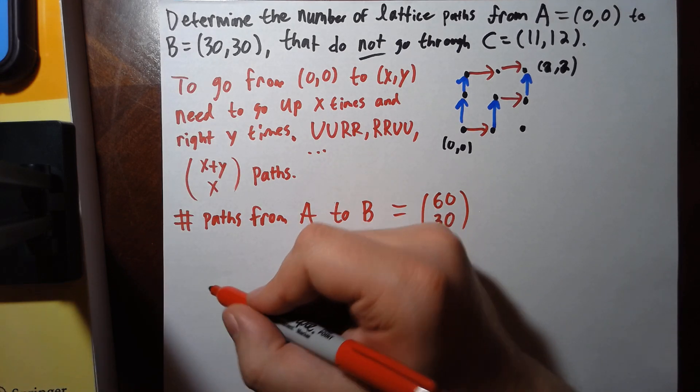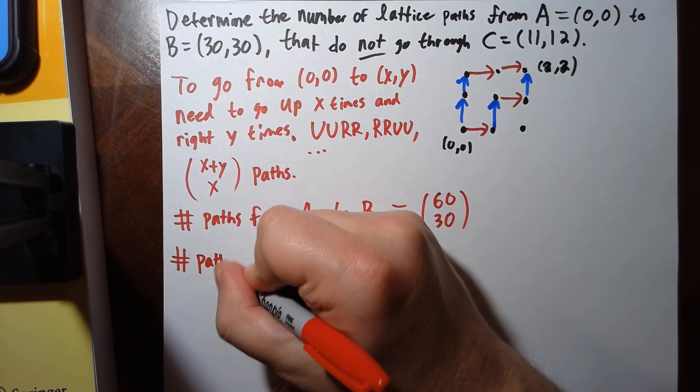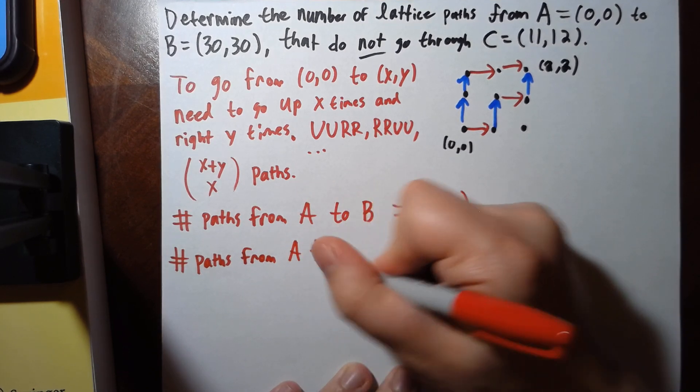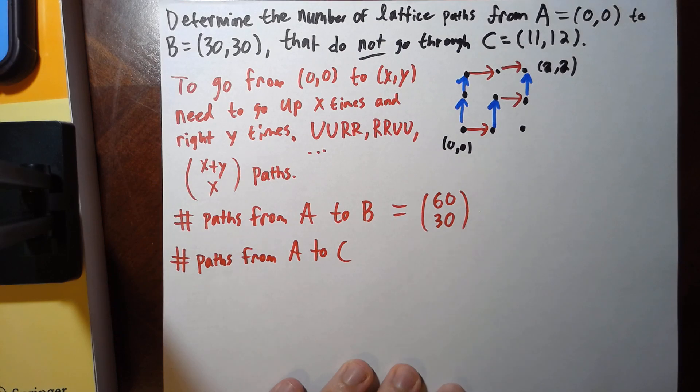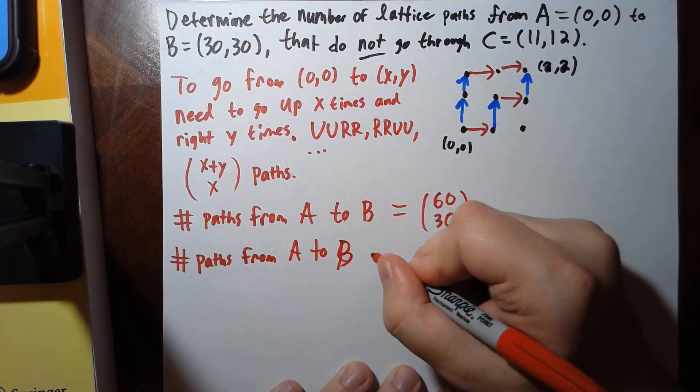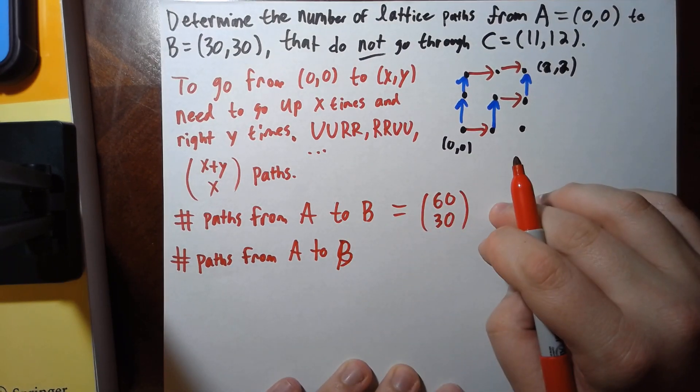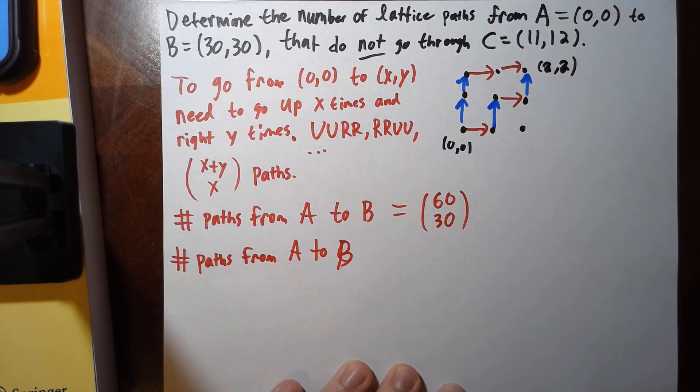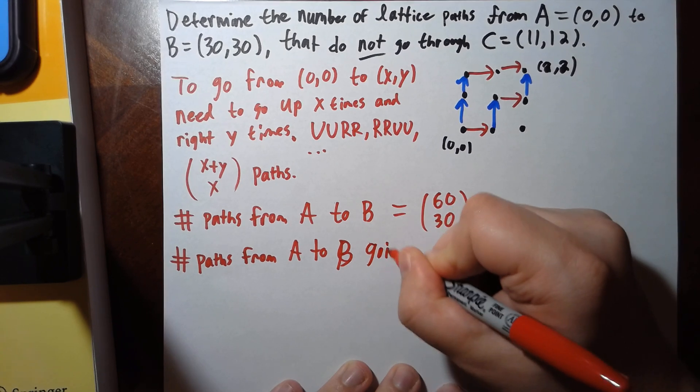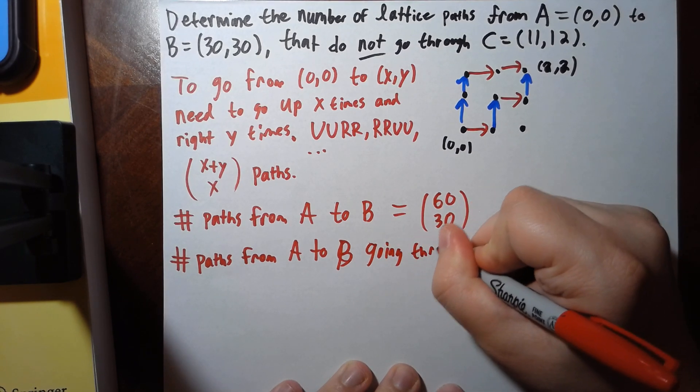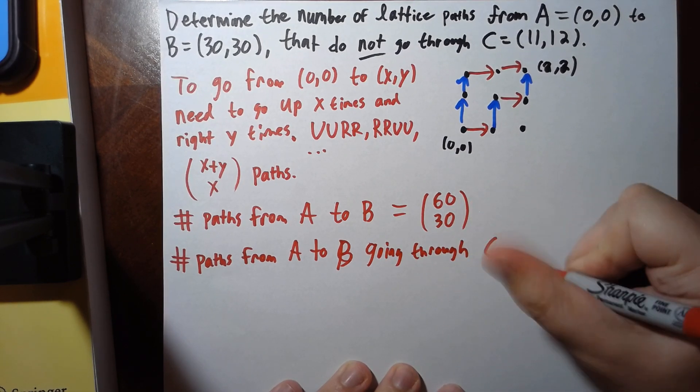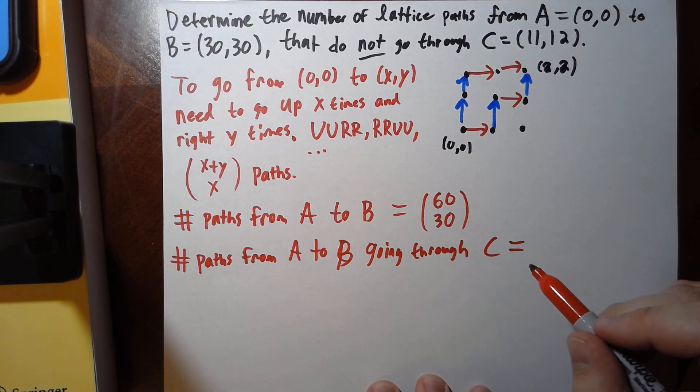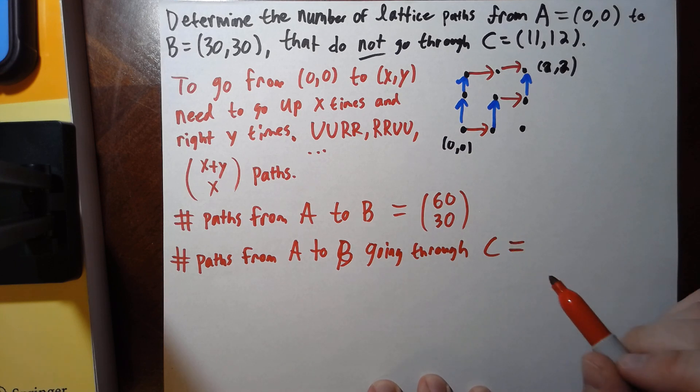So here we need the number of paths from A to C. So if we subtract—or A to B—if we know this total, if we subtract the ones that go through C, we'll get the right answer. And this is going to equal a number.